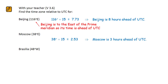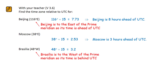Brazil has a longitude of 48 degrees to the west. Take its longitude and divide by 15. This time 3.2 is nearest to 3, so we round it down. As Brazil is to the west of the prime meridian, it will be 3 hours behind UTC.